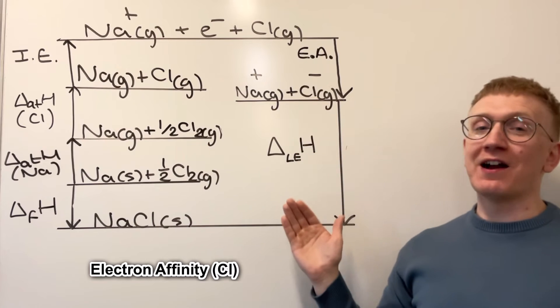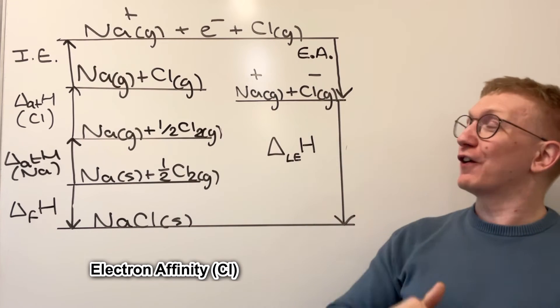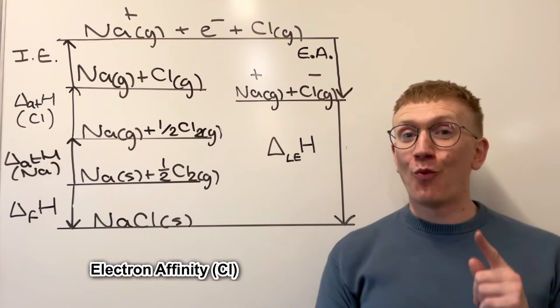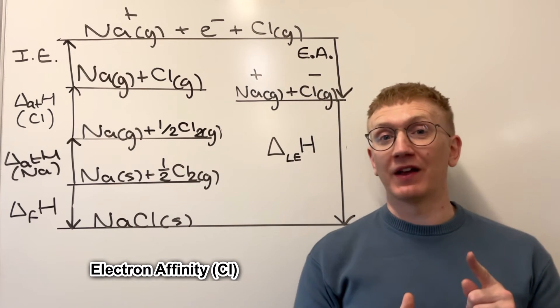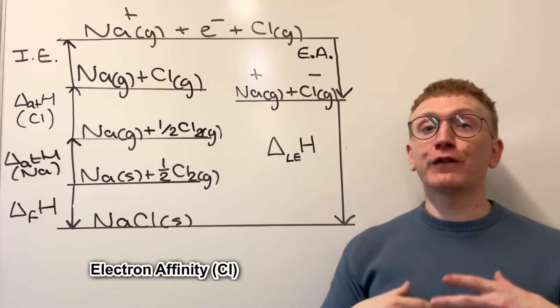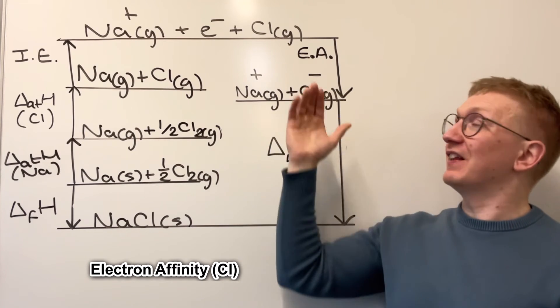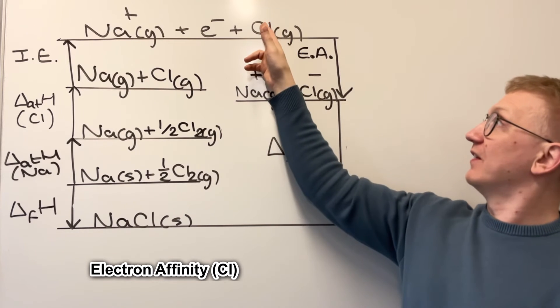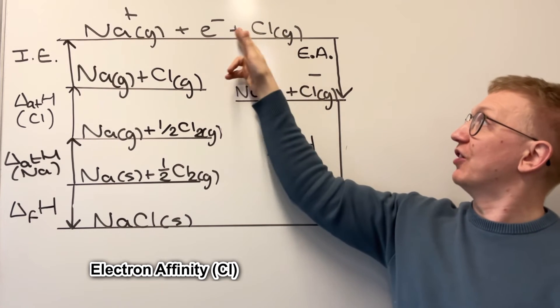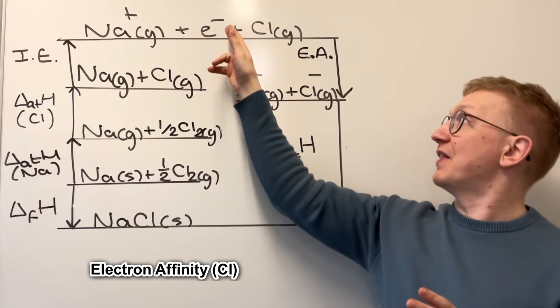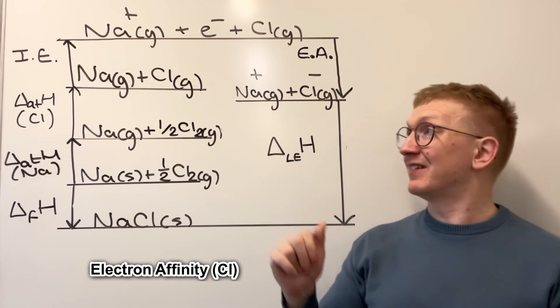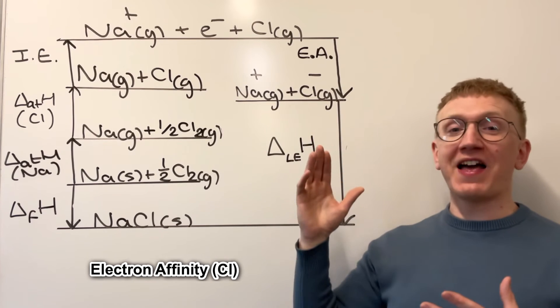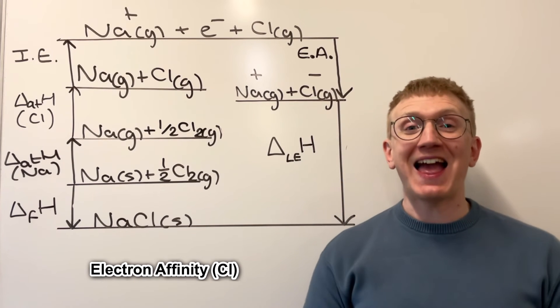Next up, we've got some downwards arrows on this side. And our first one here is electron affinity. This one has only really ever come up on one exam that I've noticed historically. Now the question asked suggests why the electron affinity, and it was for chlorine, is an exothermic value. For this, what we need to consider is that there is a net attraction between the chlorine atom and the additional electron, and that the Cl- is more stable. And so because of that, this is an exothermic enthalpy change.